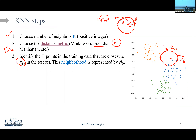Step three: identify the K points in the training data that are closest to X-test, the red dot. We represent this neighborhood as N-null or N-zero. If K equals five, we find five dots inside that neighborhood — for example, four blue and one orange.